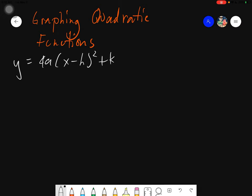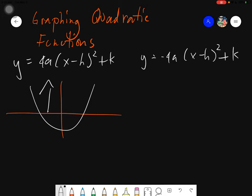We have two given kinds of quadratic functions when it comes to its graph. First one is y equals 4a times (x minus h) squared plus k, wherein the graph would look like this. It opens upward. And then again, we also have y equals negative 4a (x minus h) squared plus k. Only the negative 4a changed, and this graph will open downward.